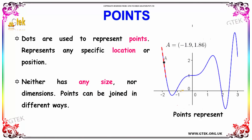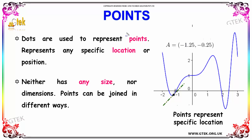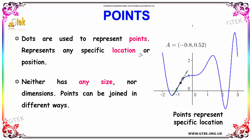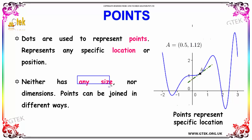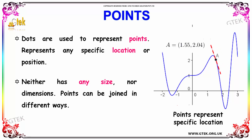What is a point? Dots that are used in a line can be said to be a point. The main function of a point is to represent any specific location or position. It does not have any particular size nor dimensions. Points can be joined in different ways, and a combination of points makes a line.